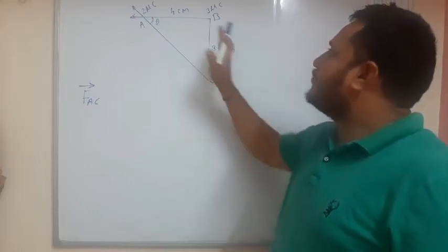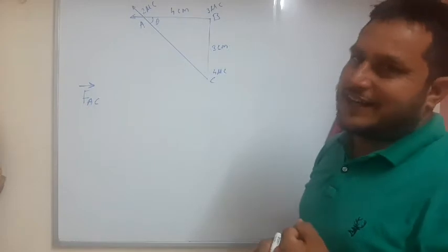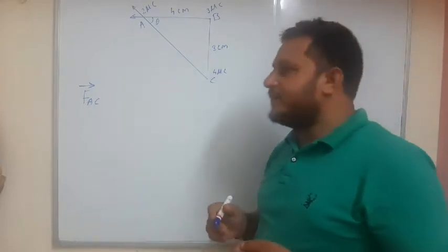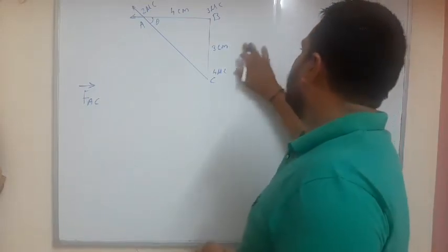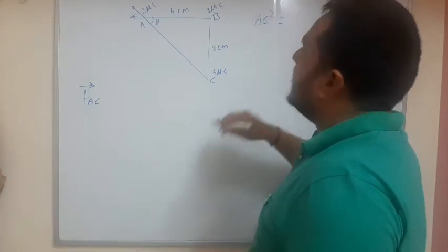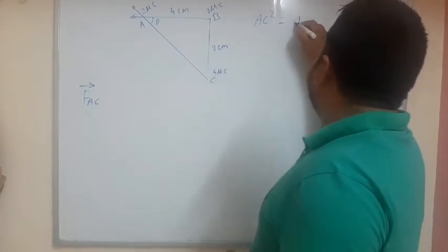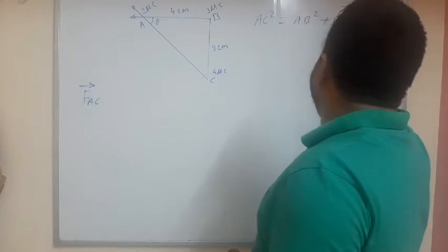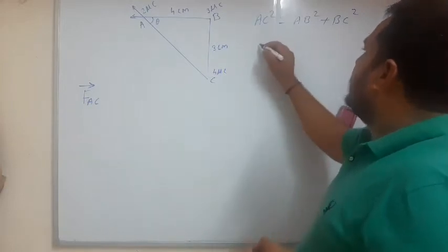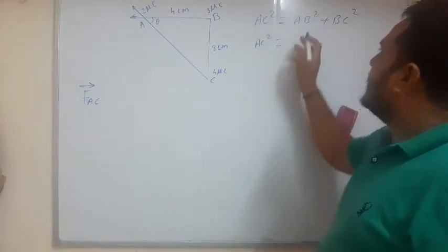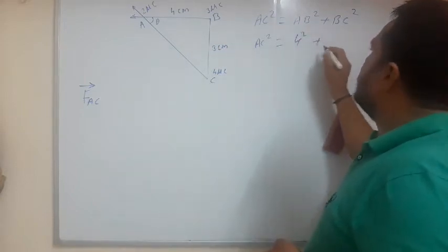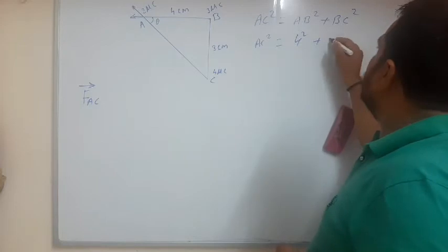If we have value of 2 sides then we can easily find the value of another side. We are having the basic fundamental formulas like here. AC square is equal to what? AB square plus BC square. So here this AC square we take as it is. Now AB means what? 4 square plus BC means what? 3 square.